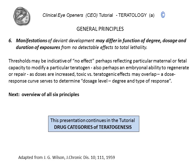The sixth principle underscores that the manifestations of deviant development may differ in function of degree, dosage, and duration of exposure — but there may be no detectable effects to total lethality. The concept is then the threshold, which scientists must consider when performing experimental studies or epidemiologic analysis, frequently requiring the application of dose-response curves. A dose-related increase in teratogenesis is one of the strongest proofs that a medication or other risk factor is teratogenic.